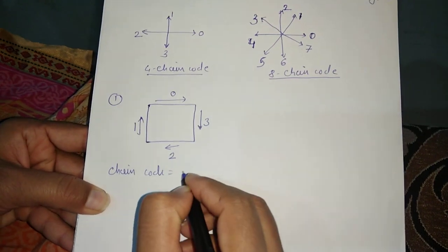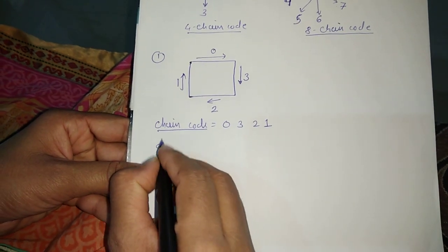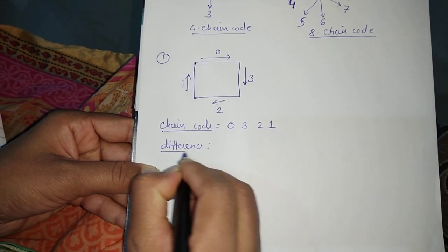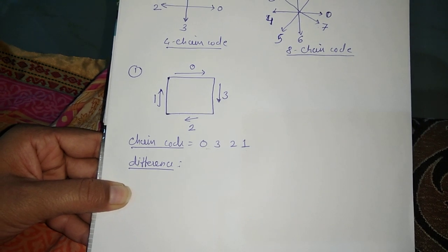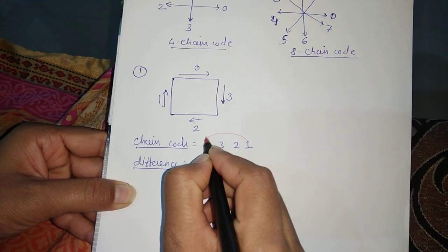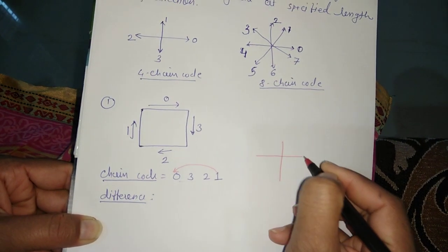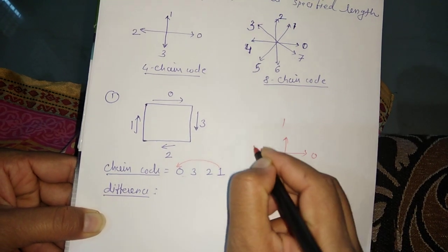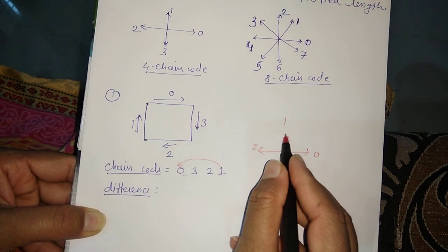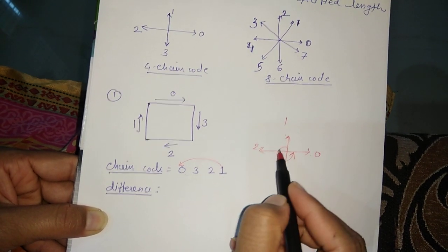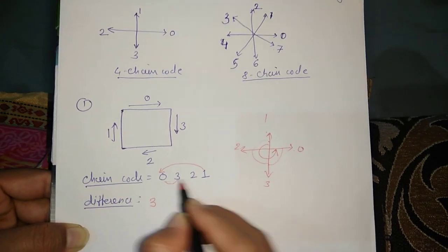Then the shape moves upward, which is code 1. So the chain code for this simple shape is 0, 3, 2, 1. Next, you have to find the difference. You subtract each chain code value from the next in the anticlockwise direction — not numerical subtraction, but using the 4-chain code diagram. For 1 minus 0 anticlockwise, the distance is 1.